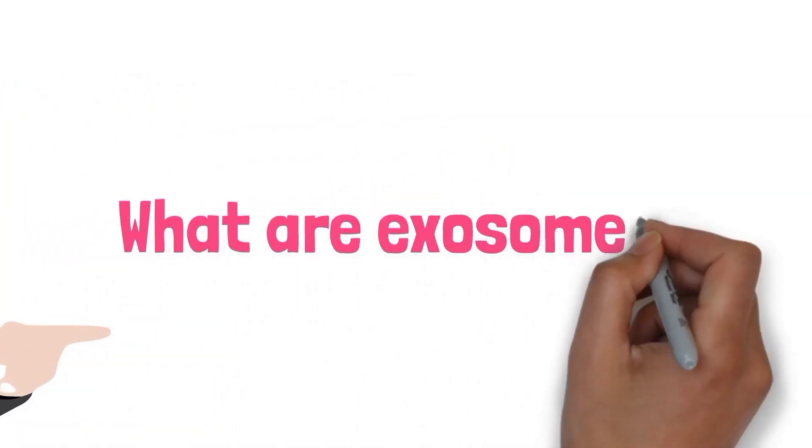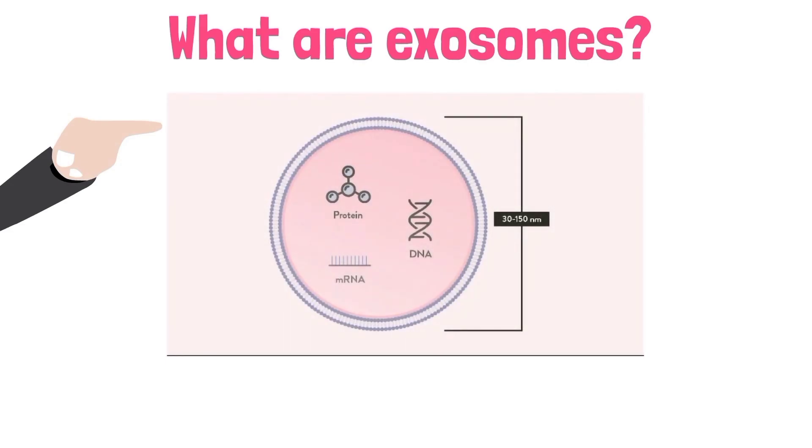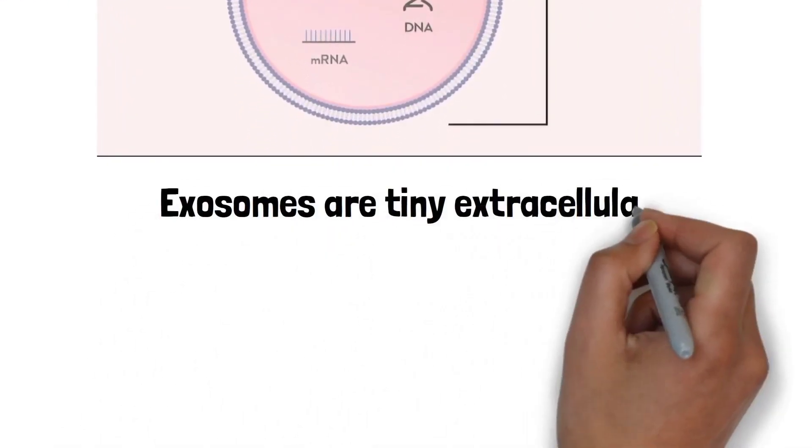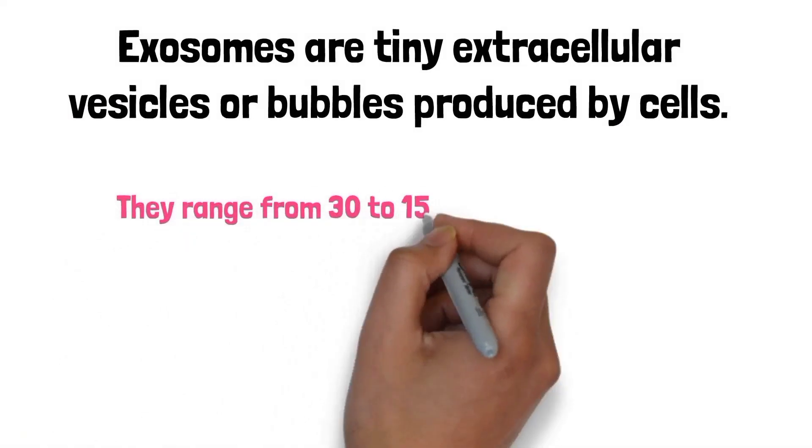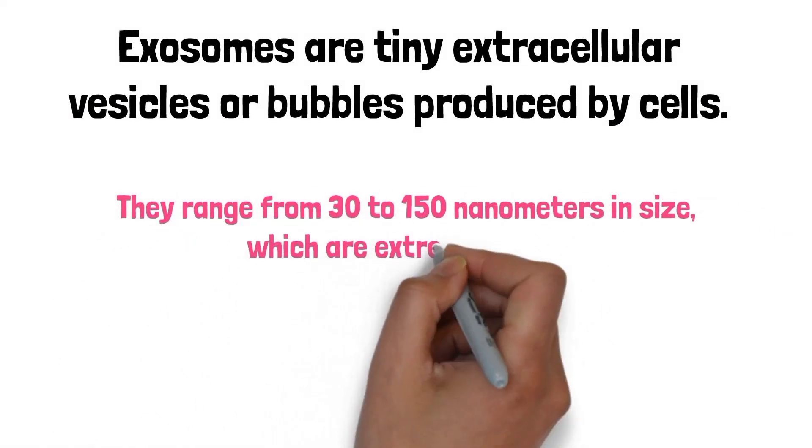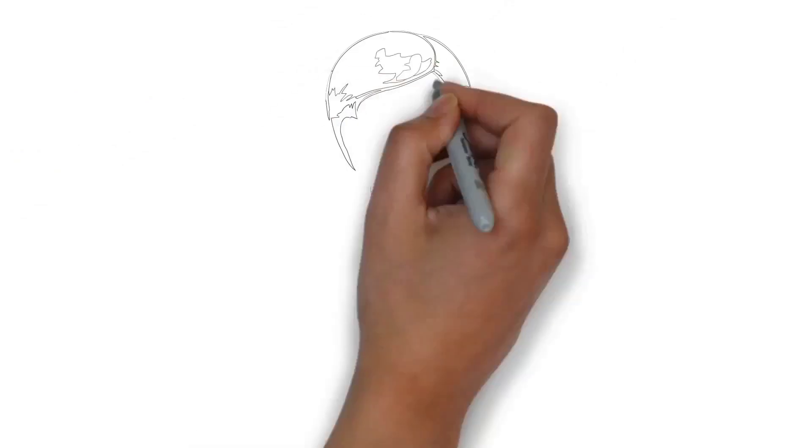What are exosomes? Exosomes are tiny extracellular vesicles or bubbles produced by cells. They range from 30 to 150 nanometers in size, which are extremely small.